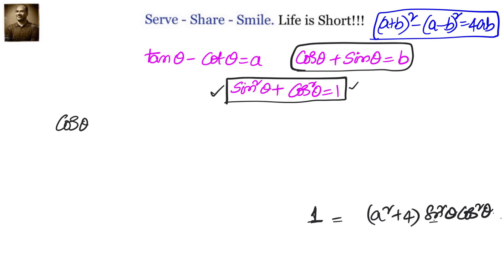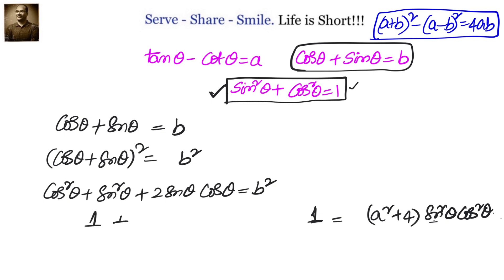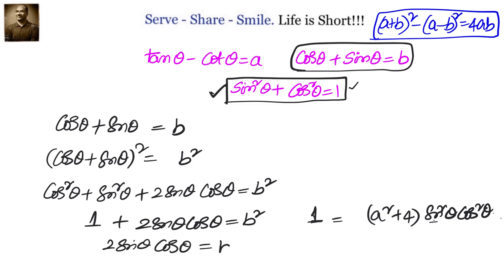We are given cos theta plus sin theta equals to B. Squaring both sides, cos theta plus sin theta whole square equals to B square, which gives cos square theta plus sin square theta plus 2 sin theta cos theta equals to B square. Since cos square theta plus sin square theta equals to 1, we get 1 plus 2 sin theta cos theta equals to B square, so 2 sin theta cos theta equals to B square minus 1. Squaring again, 4 sin square theta cos square theta equals to B square minus 1, whole square.